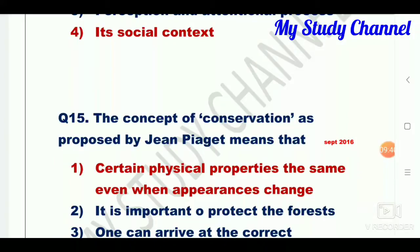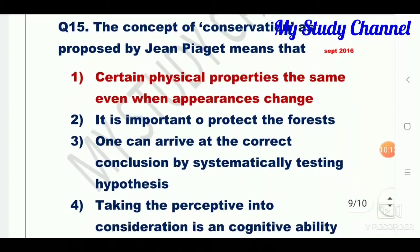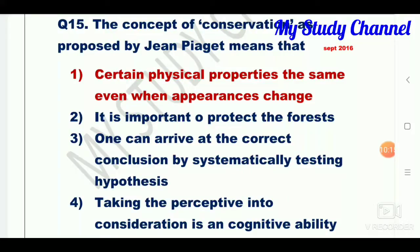Question number fifteen and last question of this session: the concept of conservation as proposed by Jean Piaget means that dash. Option one is certain physical properties remain the same even when appearances change; second is it is important to protect the forest; third is one can arrive at the correct conclusion by systematic testing of hypotheses; fourth is taking perspective into consideration is a cognitive ability. Option one is the right answer — certain physical properties remain the same even when appearances change.